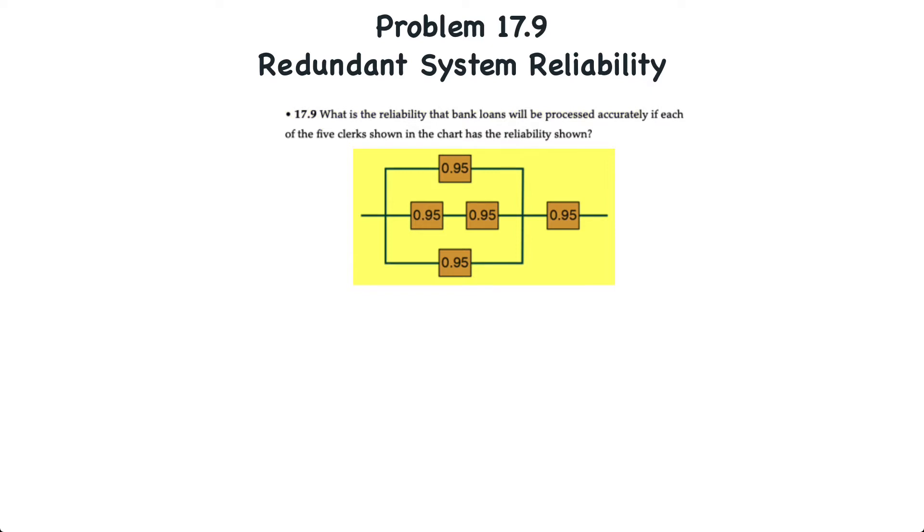A diagram like this shows clerks, which could also be considered components in any other type of system, in both series and with redundancy in parallel. Now, even though in this case all of the clerks or components have equal reliability, we just can't go and multiply all of the reliabilities together. There's a process that we have to follow.